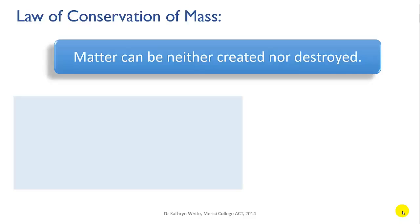The law of conservation of mass states that matter can neither be created nor destroyed. It can be changed from one form into another, and mixtures can be separated or made, and pure substances can be decomposed into other pure substances. But the total amount of mass remains constant.